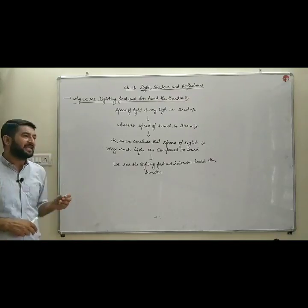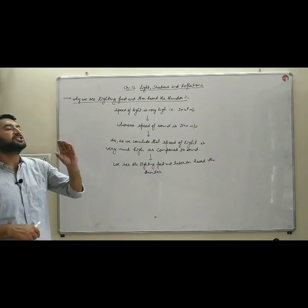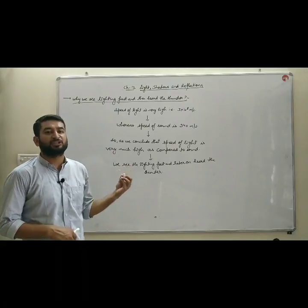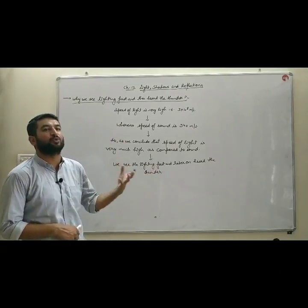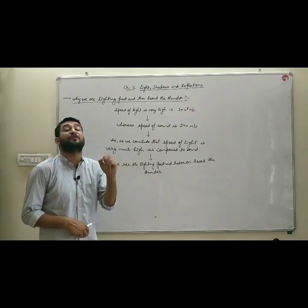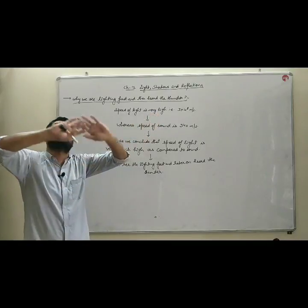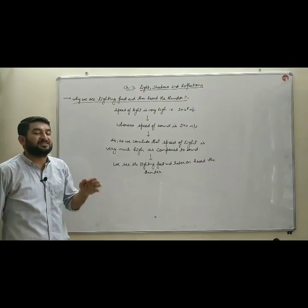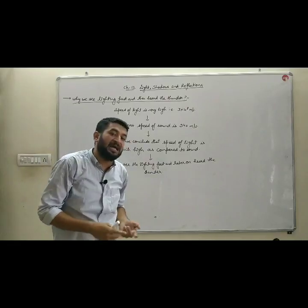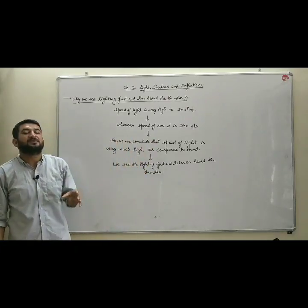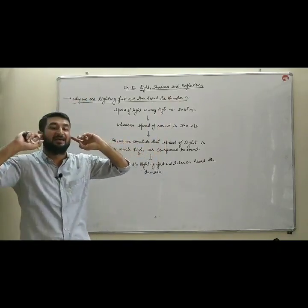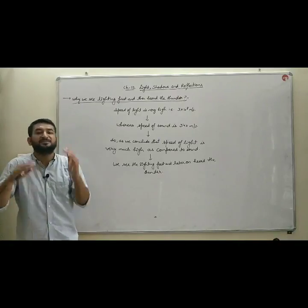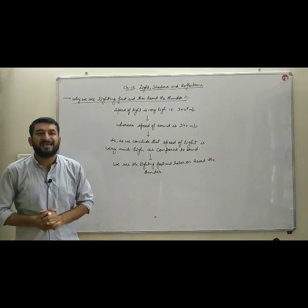Now we will discuss why during a thunderstorm we always first see the lightning and then hear the thunder. The speed of light is very high — that is 3 × 10⁸ meters per second, approximately 30 crore meters per second — whereas the speed of sound is only 340 meters per second. Since the speed of light is much higher than the speed of sound, light enters our eyes before sound reaches our ears. That is why we see lightning first and then hear the thunder.